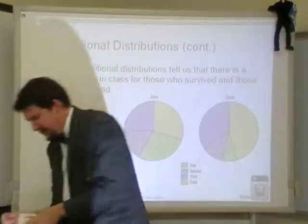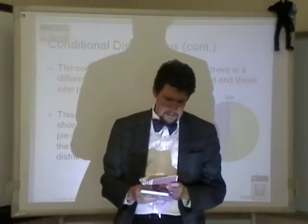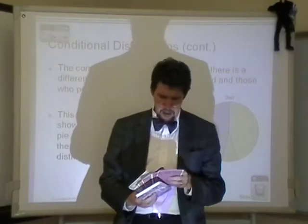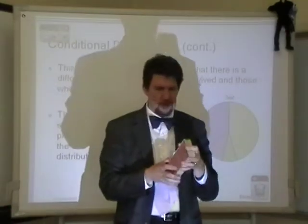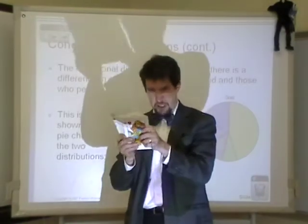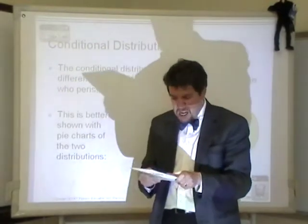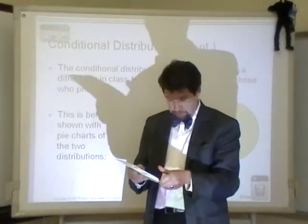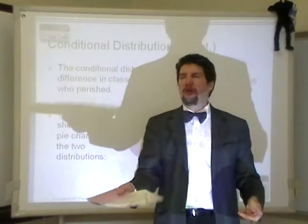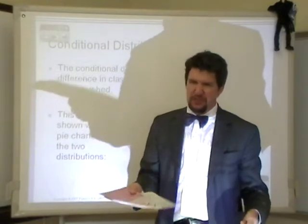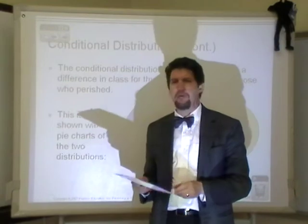Now here we have a deck of cards — it's a big deck so you can see what's going on. I've taken the two jokers out. I'm going to shuffle them. They're shuffled. What's the probability that you're going to pull out the seven of clubs? There are 52 cards, so that probability is one out of 52.